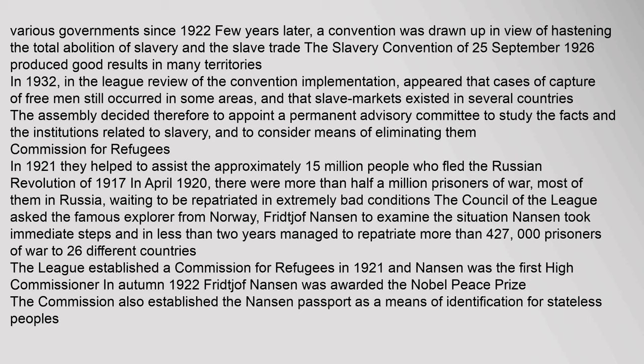In 1921, the League helped assist approximately 15 million people who fled the Russian Revolution of 1917. In April 1920, there were more than half a million prisoners of war, most of them in Russia, waiting to be repatriated in extremely bad conditions. The Council of the League asked the famous Norwegian explorer Fridtjof Nansen to examine the situation. Nansen took immediate steps and in less than two years managed to repatriate more than 427,000 prisoners of war to 26 different countries. The League established a commission for refugees in 1921, and Nansen was the first High Commissioner. In autumn 1922, Fridtjof Nansen was awarded the Nobel Peace Prize. The commission also established the Nansen passport as a means of identification for stateless peoples.